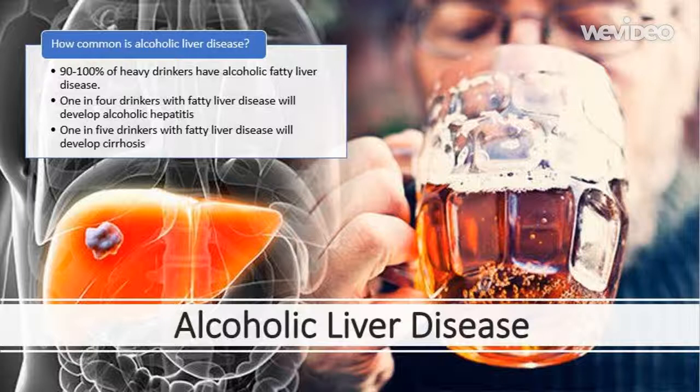Alcohol is one of the most common causes of death, along with smoking and high blood pressure. Fatty liver disease and hepatitis can develop at any age. Cirrhosis usually develops in people aged 40 or over, however cases have been reported in people of all ages, including teenagers.